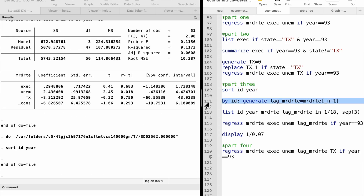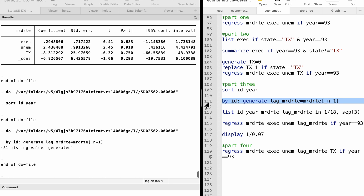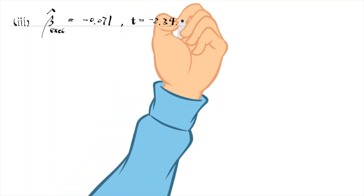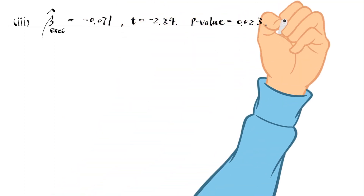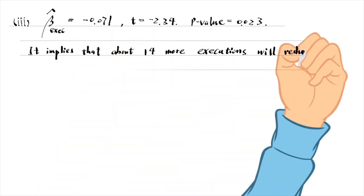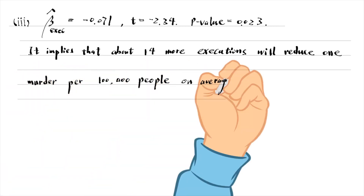In part 3, we add the lagged murder rate to the model. We create lag variables for different subgroups in Stata using the by prefix and subscripts, and we sort the observations in order first. We can list the variables to ensure they are correct. The regression gives an estimate of minus 0.071 for the coefficient on the execution variable, implying that one more execution is estimated to reduce the murder rate by 0.07 murders per 100,000 people after controlling for unemployment and the past murder rate. That is, about 14 more executions will reduce one murder per 100,000 people on average.